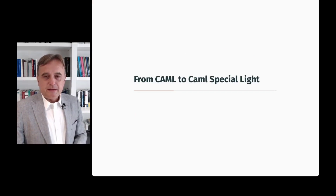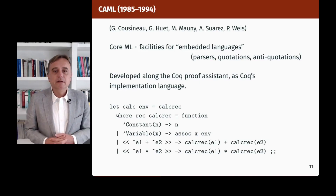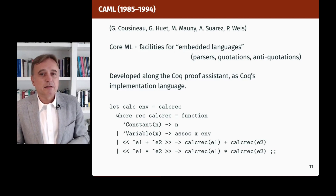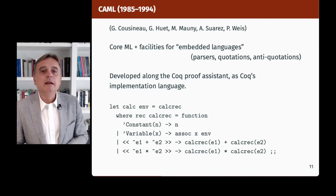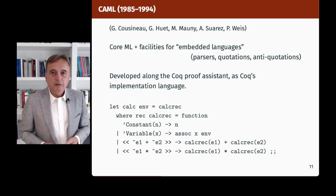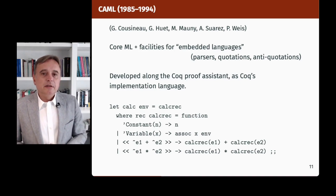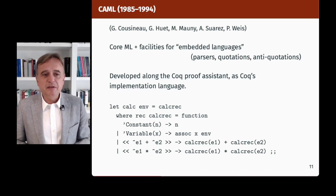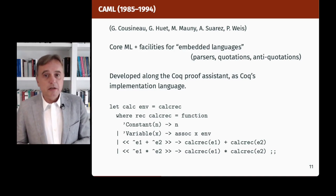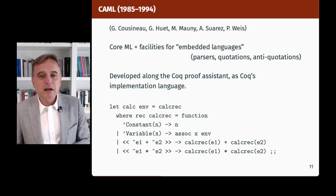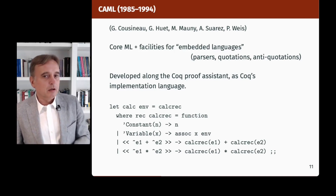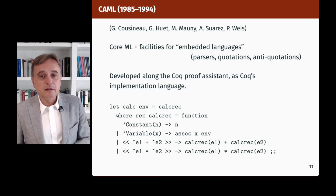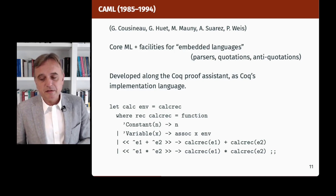The CAMEL language was the result of work by Guy Cousineau and Gérard Huet at University Paris 7 and later at ENS in the early 80s, later joined by Michel Mauny, Ascander Suarez, and Pierre Weiss. Basically, it was CoreML plus facilities for embedded languages — like parser quotations and type quotations, the kind of thing we do with CamlP4 or CamlP5 these days. You can see a bit of CAMEL code with a WHERE construct, constructors with quotes, and the use of quotations and anti-quotations for a little language of arithmetic expressions used as patterns.